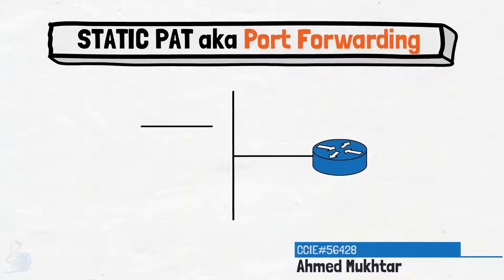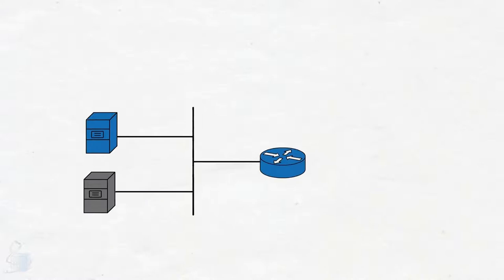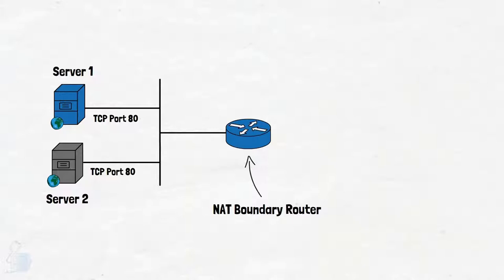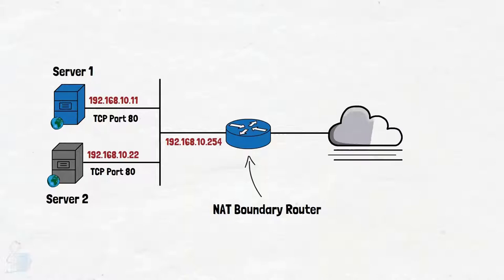In this video, we will take a look at static port address translation, or port forwarding, with multiple inside servers. In almost every network, you will find two or more servers with duplicate port numbers. The most common example would be two web servers operating on port 80 or 443 residing inside a network behind a NAT boundary router. Duplicate ports aren't an issue inside a network because the IP address is the differentiator of the packet at layer 3.